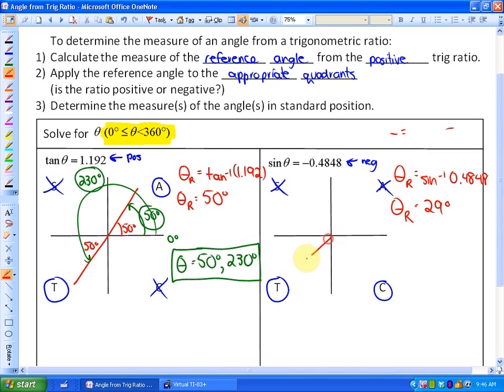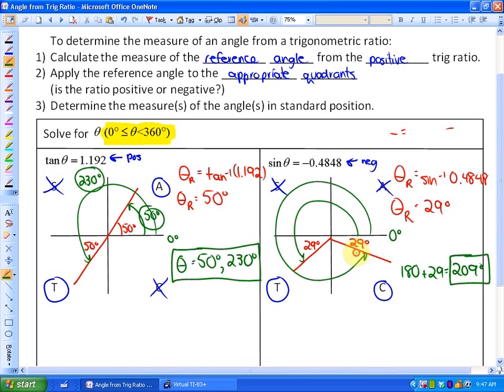So if we apply that angle, 29 degrees, to both of these quadrants, our standard position angles that have those ratios would be 180 plus 29, which is equivalent to 209 degrees. And our other standard position angle would be 360 minus 29. And in that particular case, your answer would be 331 degrees.